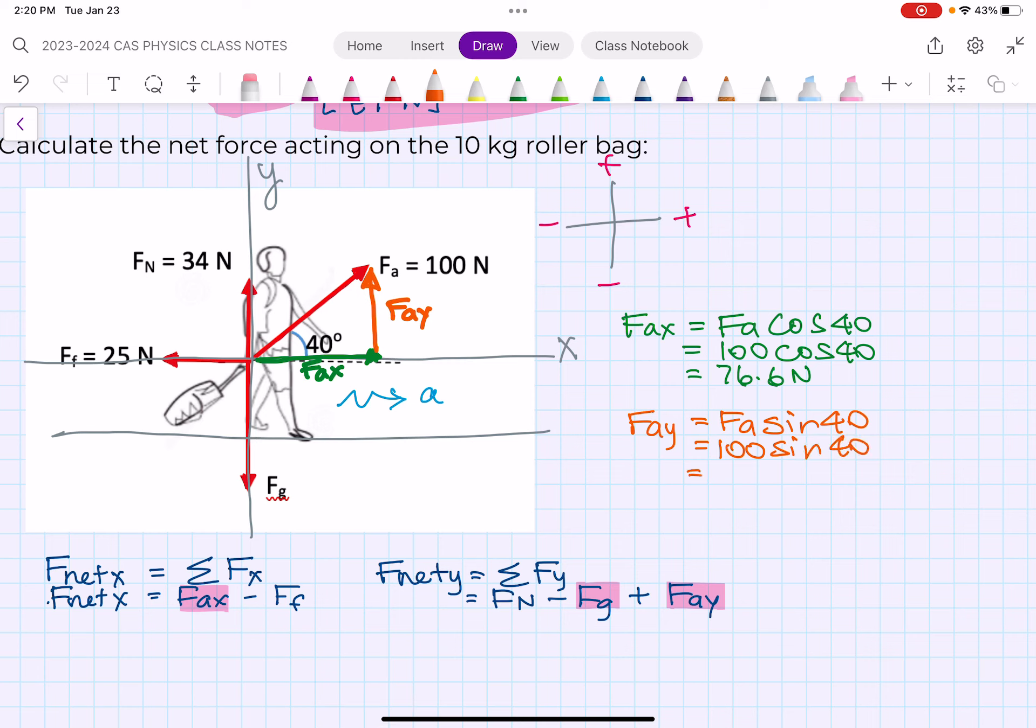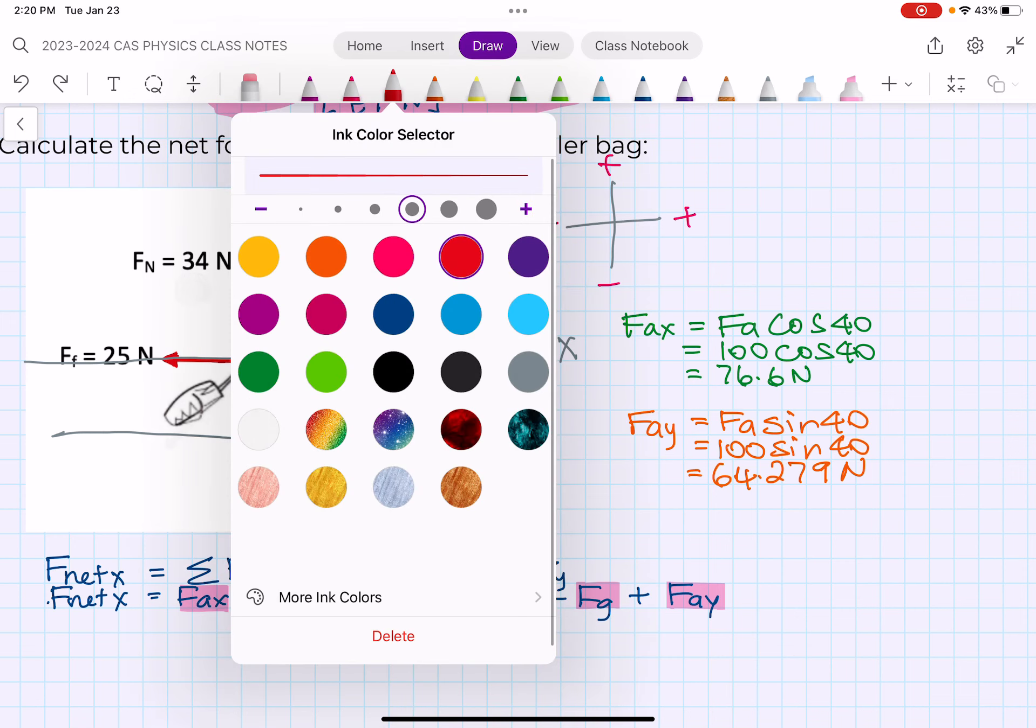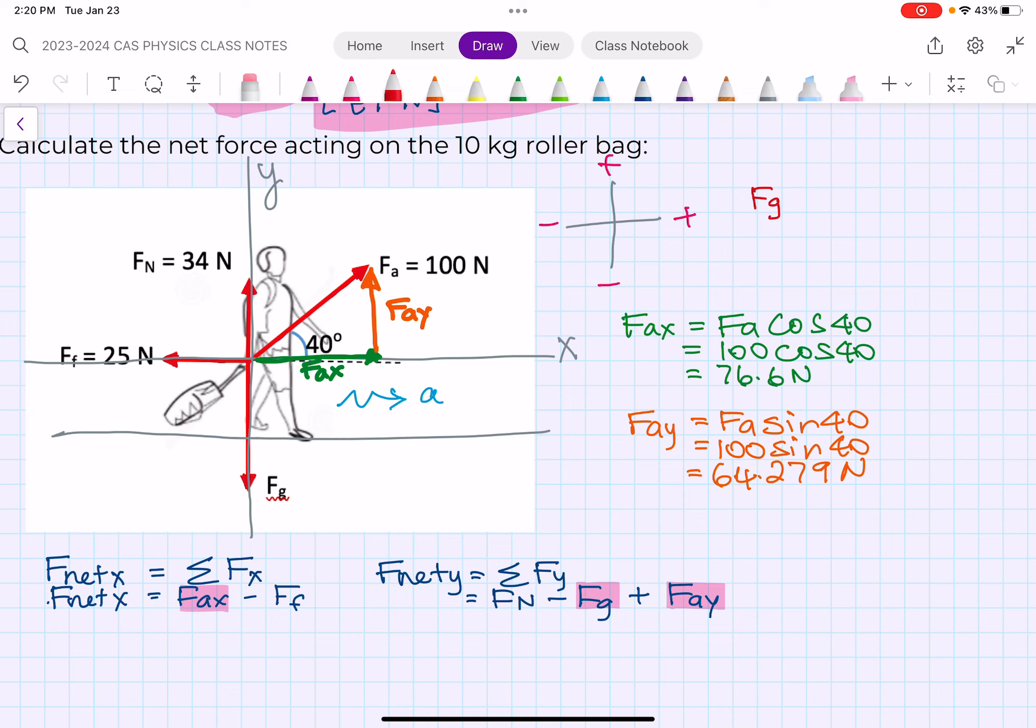There's one other equation we have, and that's F_g. We know that F_g - I'll do it over here - F_g is equal to - remember, this is a given equation, you'll always know that F_g is equal to mass times the acceleration due to gravity. The mass they tell us is 10 kilograms times 9.8, so F_g is equal to 98 newtons. So now we can go ahead and plug this stuff in.